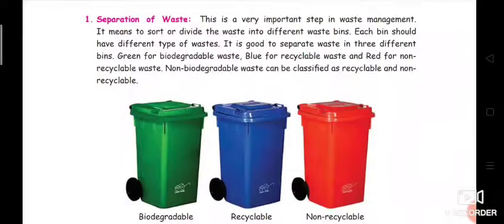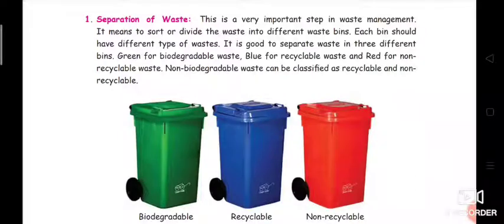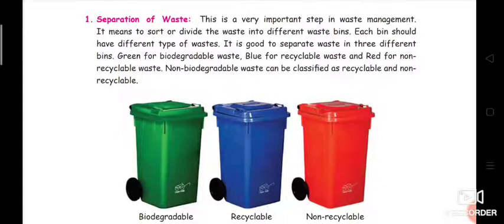In the first step, we separate the waste. The green dustbin is for biodegradable waste — waste which decomposes easily. For example, all waste from the kitchen: waste from vegetables, fruits, and the skin of vegetables and fruits — all these things come under biodegradable waste.